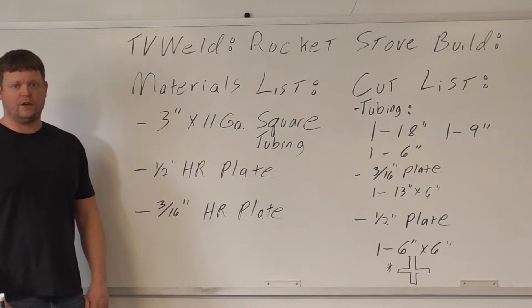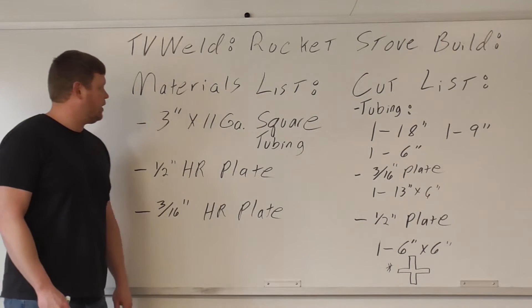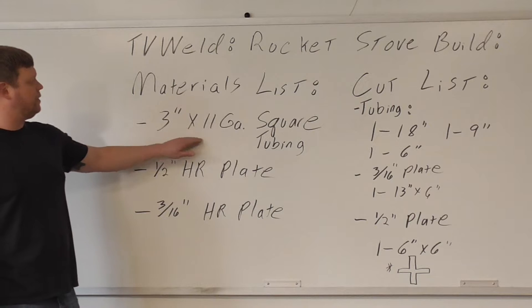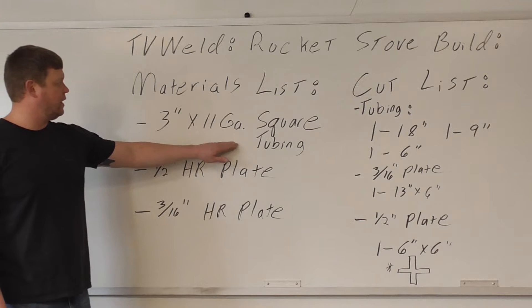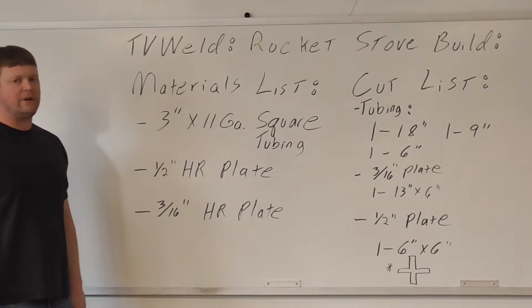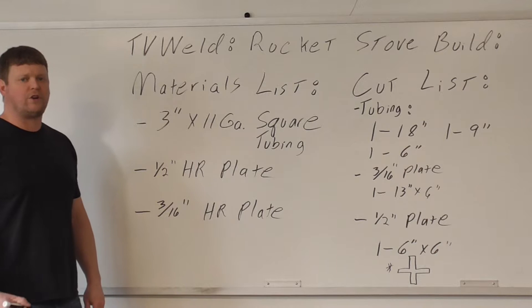Then we'll go out and build this thing. Let's start first with our materials list. The thing is going to be made out of 3 inch, 11 gauge square tubing. 11 gauge means it's about 1/8 of an inch wall thickness, so certainly strong enough to take the heat that's going to be required to have a fire within it.